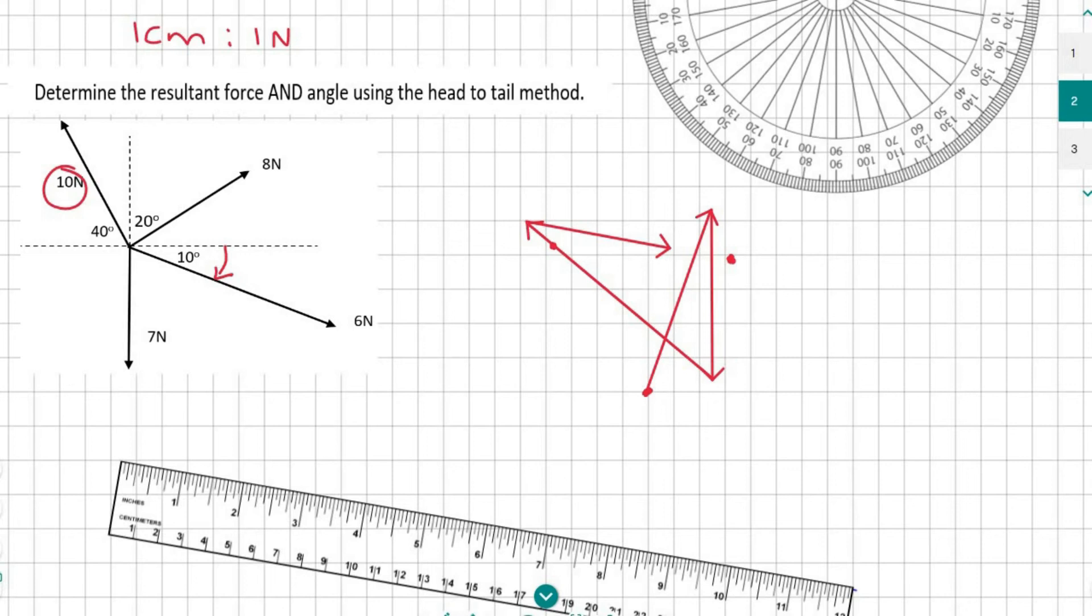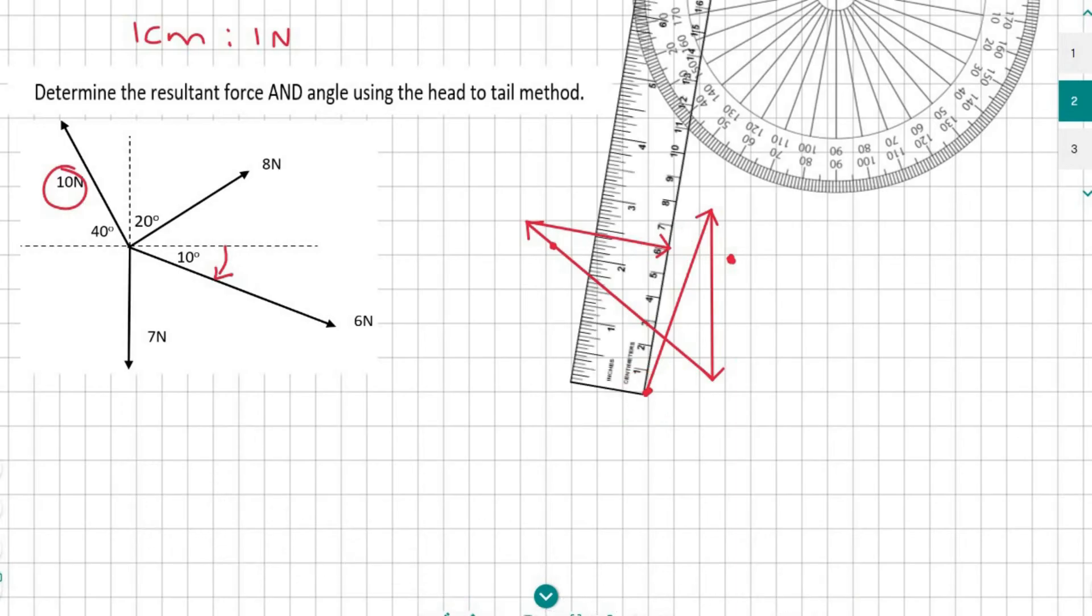Now that we have finished, we need to measure the distance from the start to the ending point. If I measure that length from here to here on my ruler, it's about 6 centimeters. If you're getting anywhere close to 6 centimeters, that is good. In our scale, 1 centimeter equals 1 newton, so the resultant force will be 6 newtons.